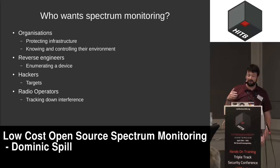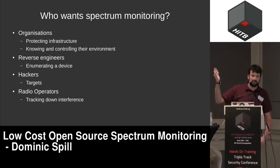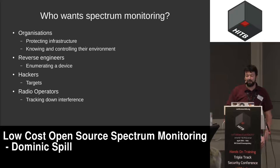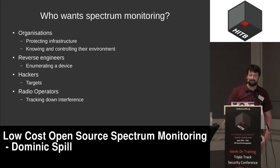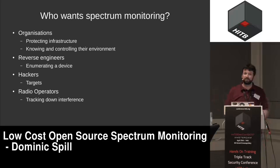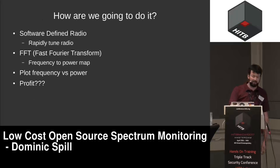Radio operators are another group doing this. Has anyone got their amateur radio license? Just a handful. Amateur radio operators will be the first people to track you down if you start transmitting on a channel you shouldn't be — significantly before the FCC or Ofcom. They're fantastic at finding interferers quickly, and they get a kick out of monitoring wide bands of spectrum to see who is transmitting and whether they should be.